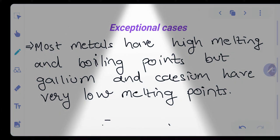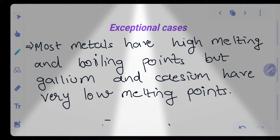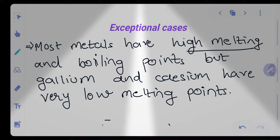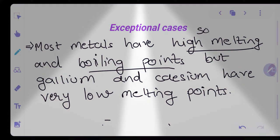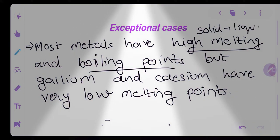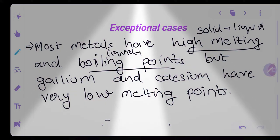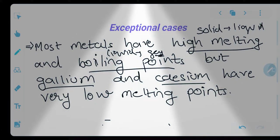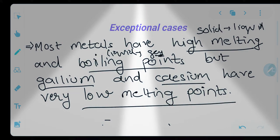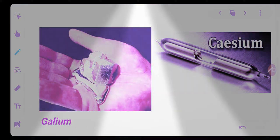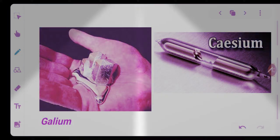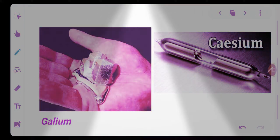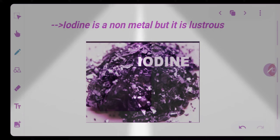Now let's talk about exceptional cases — some metals and non-metals that do not follow normal properties. All metals generally have very high melting and boiling points, meaning they convert from solid to liquid only at very high temperatures. However, gallium and cesium are exceptional — their melting points are very low. Gallium can melt in your hand at room temperature. Cesium is stored in a glass flask and can roll from one end to another.